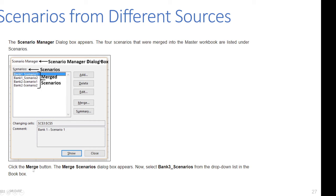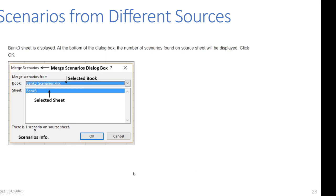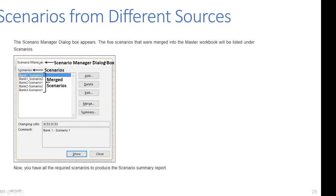Click the Merge button again. The Merge Scenarios dialog box appears. Select 'Bank Three Scenarios' from the drop-down list in the Book box. Bank Three sheet is displayed, and the number of scenarios found is shown — there is only one scenario for Bank Three. Click OK. The Scenario Manager dialog box appears again, and the five scenarios merged into the master workbook are listed: two from Bank One, two from Bank Two, and one from Bank Three.